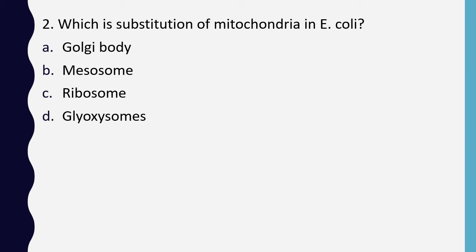Question 2. Which is the substitution of mitochondria in E. coli? Options are: Golgi bodies, mesosomes, ribosomes, or glyoxysomes. The correct answer is option B: mesosomes.